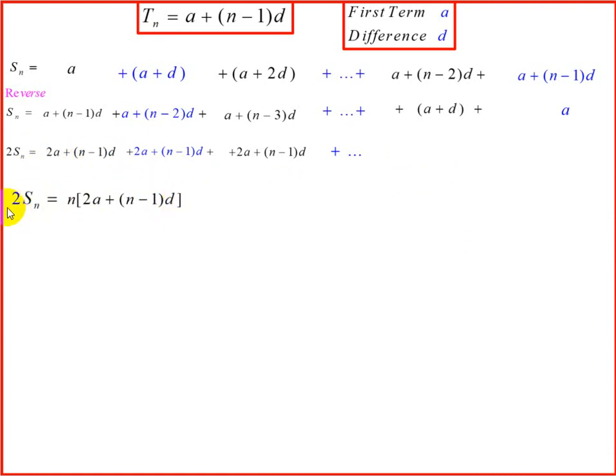So to find S_n, we need to divide by 2. Dividing both sides by 2 gives us S_n equals n divided by 2 into 2a plus n minus 1 into d. And that is how we prove the formula for the sum to n terms of an arithmetic series. Thank you.